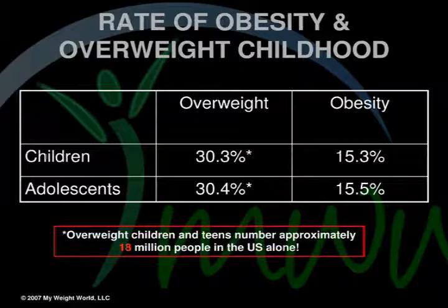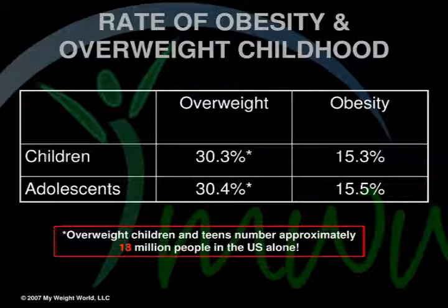Rate of obesity and overweight in childhood: 30.3% of children are overweight and 15.3% are considered obese. In adolescents, 30.4% are overweight and 15.5% are obese. Overweight children and teens number approximately 18 million people in the U.S. alone, and these numbers are growing.